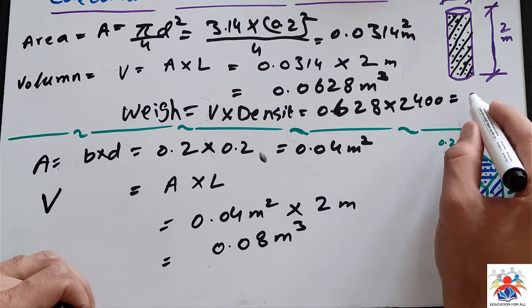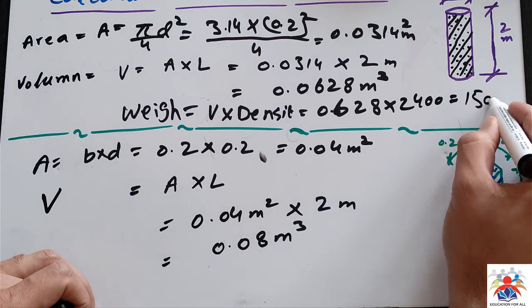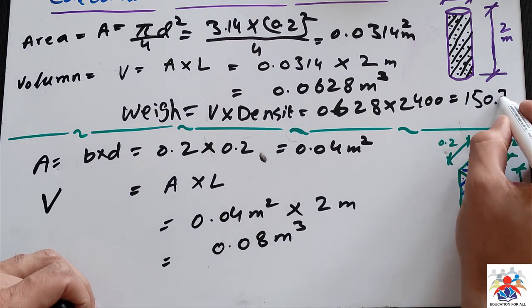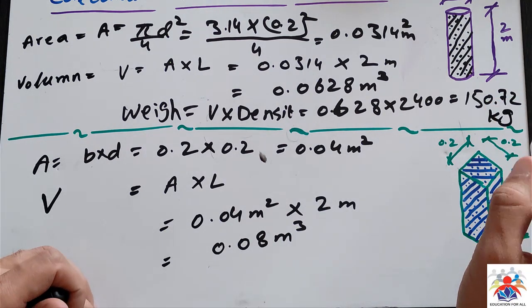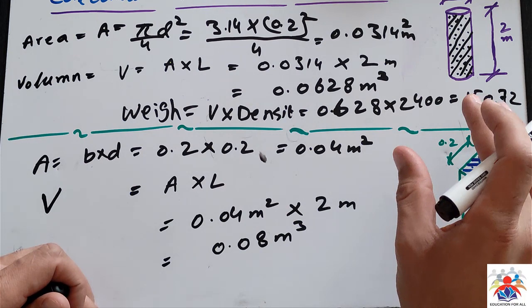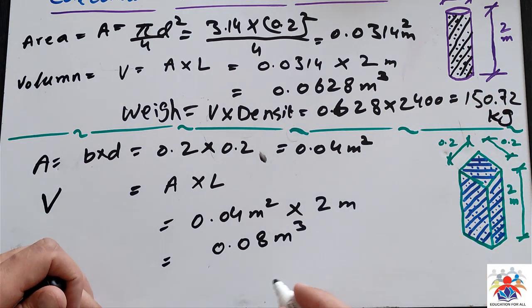150.72 kilograms. So 150.72 kilograms is the weight of our round column.